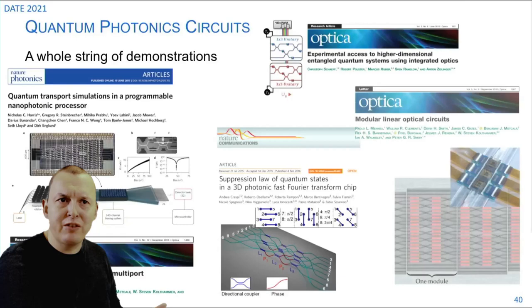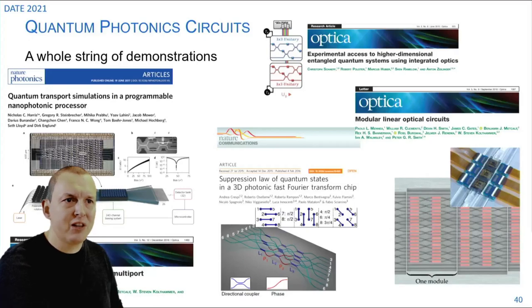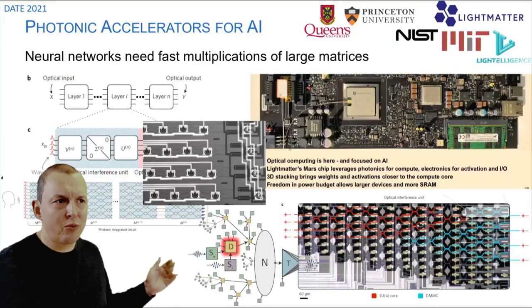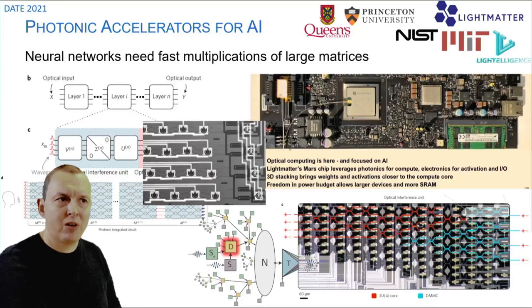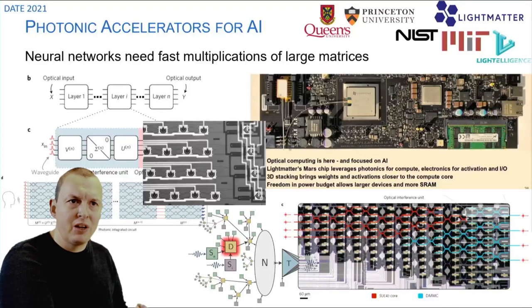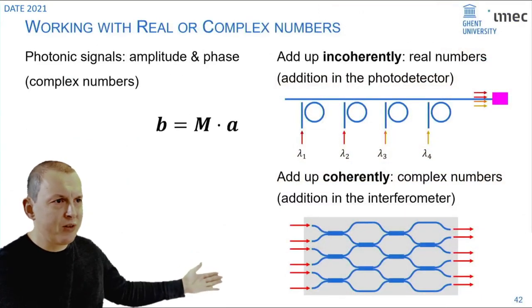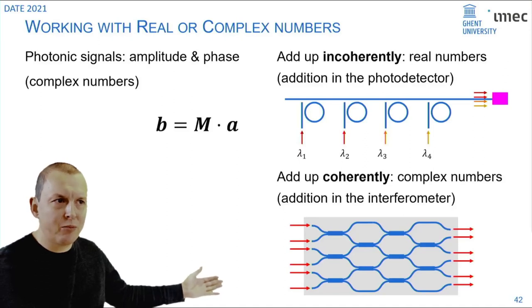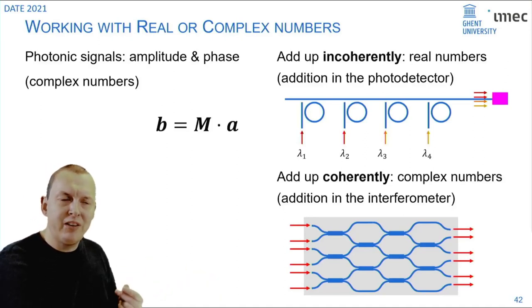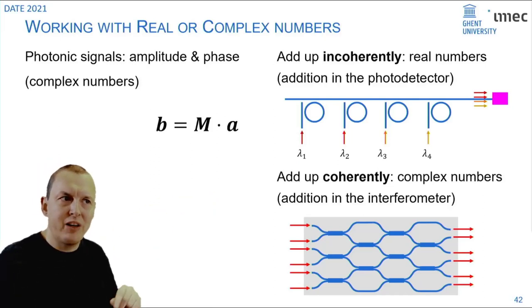It's no surprise that we've seen over the past years a lot of demonstrations in the field of quantum photonics using these type of circuits and also in the field of neuromorphic computing and AI accelerators. When you want to do computing there's different ways to approach this. You can use your light as a coherent system in these interferometric circuits where your light is being combined in the interferometer or you can use your light incoherently by picking different wavelengths which do not interfere and combining them together at the very end in a photodetector. That gives you the difference between processing complex numbers or processing real numbers.